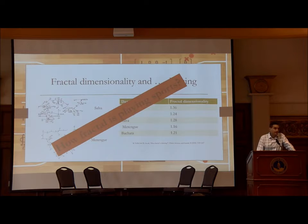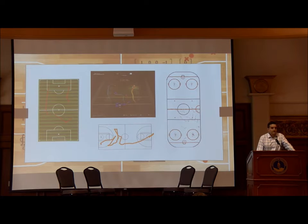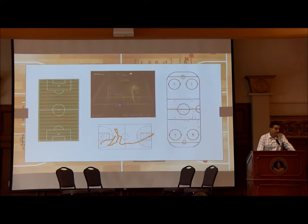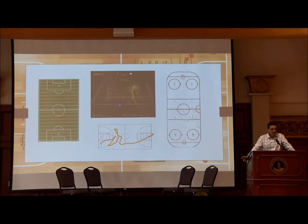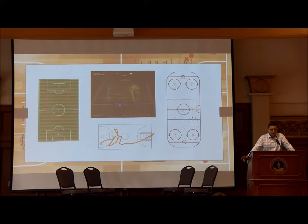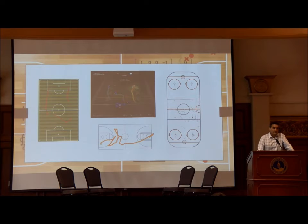How can you use this for sports? All major sports have some spatial notion. In soccer, you have 11 players per team running on the field with spatial trajectories, passing the ball. In American football, players run routes and the ball follows a trajectory. Basketball and hockey are the same. You have a lot of spatial information about how people are distributed on the field, the spatial distribution of shot locations, and so on. There is a huge possibility of using fractal dimensionality in sports.